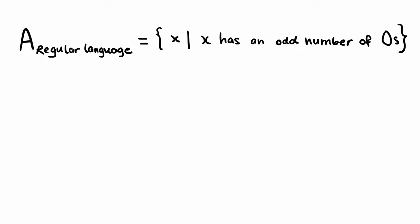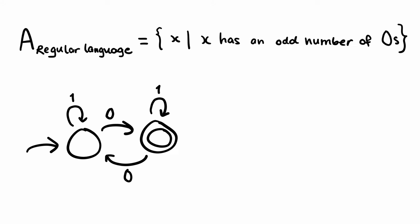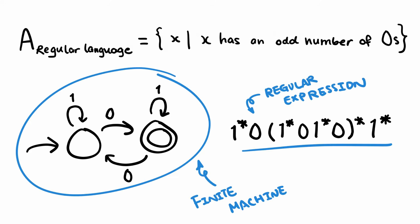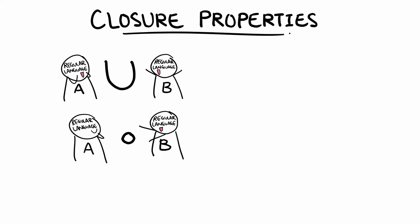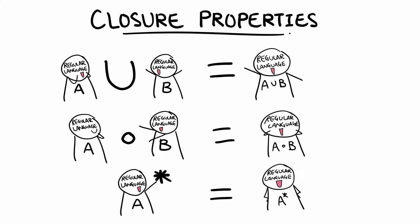We know that all regular languages can be expressed using finite machines or regular expressions. And all regular languages will share the same properties, such as the closure properties that state that the regular operations union, concatenation and star of regular languages are still regular.